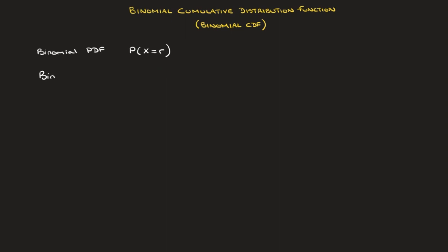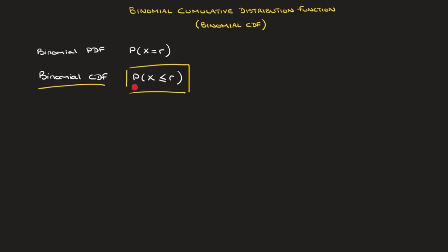The binomial cumulative distribution function, or binomial CDF, on the other hand, will allow us to calculate the probability that the discrete random variable X be less than or equal to some value R. Another way of reading this is that the binomial CDF will allow us to calculate the probability that the number of successes be less than or equal to R.